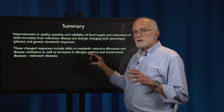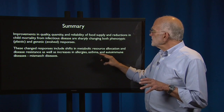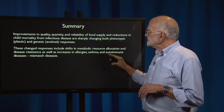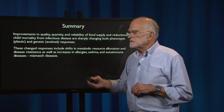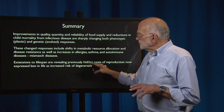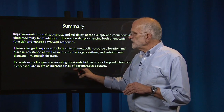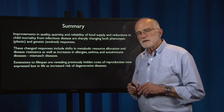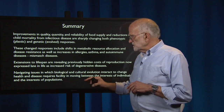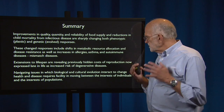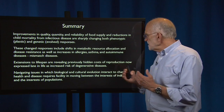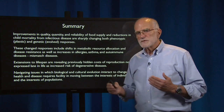These changed responses include shifts in metabolic resource allocation and disease resistance, as well as increases in allergy, asthma, and autoimmune diseases — the mismatch diseases. Extensions to the lifespan are revealing previously hidden costs of reproduction, now expressed late in life as increased risk of degenerative disease. Navigating these issues, in which biological and cultural evolution are interacting to change health and disease, requires facility in moving between the interests of individuals and the interests of populations. Understanding evolutionary processes helps develop that facility and mental agility.